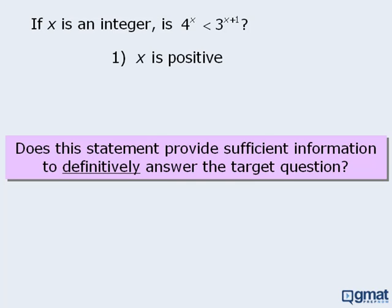It's hard to tell at the moment. Let's try plugging in some numbers to see if this reveals anything. We'll use a table to help organize our results. First we'll choose some values for x that satisfy the condition in statement 1 that says x must be positive. Then, using these values for x, we'll ask our target question: is 4 to the power of x less than 3 to the power of x plus 1?